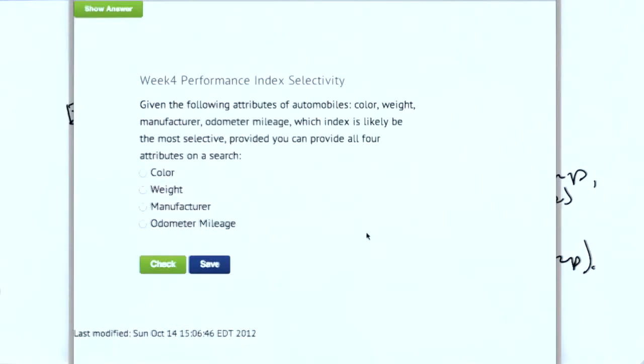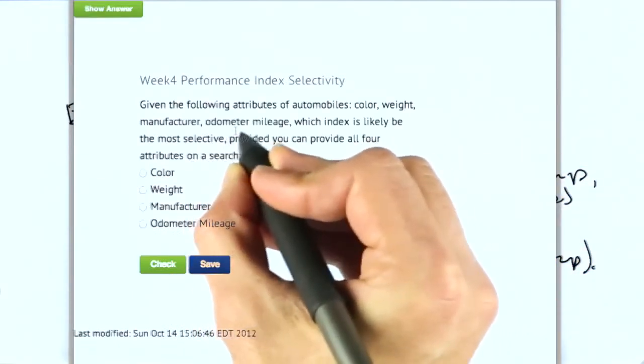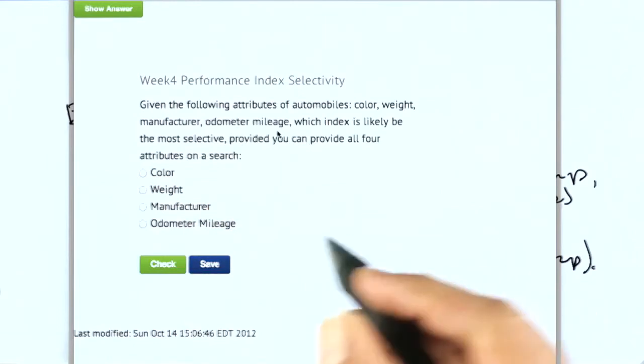All right, so time for a quiz. Given the following attributes of automobiles: color, weight, manufacturer, and odometer mileage, which index is likely to be the most selective, provided you can provide all four attributes on a search? So which of these is going to be the most selective to narrowing down the number of automobiles?